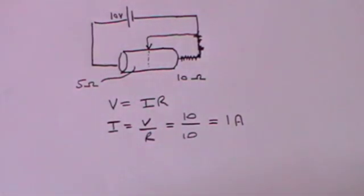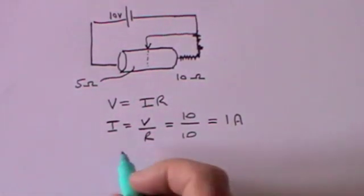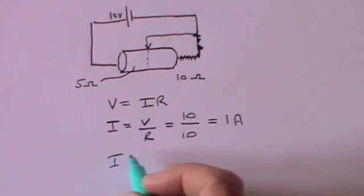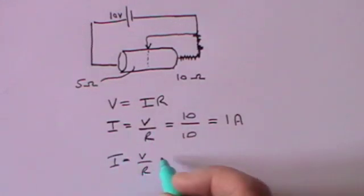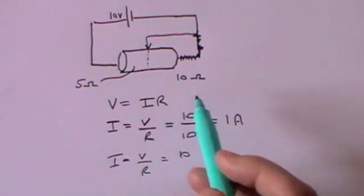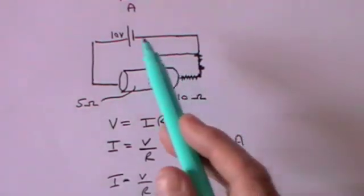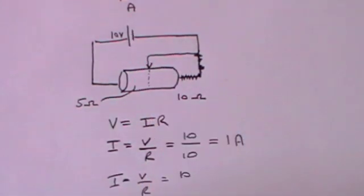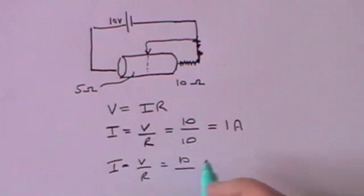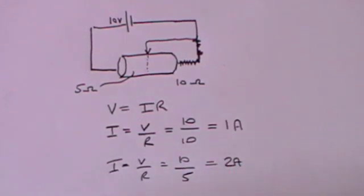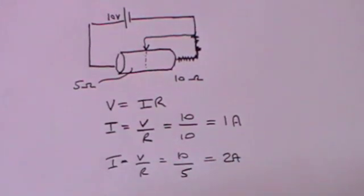If I now want to know what the current is, it's V over R again. The voltage hasn't changed — it's still 10 volts — but the resistance is now 5 ohms, so we get 2 amps flowing in the circuit.